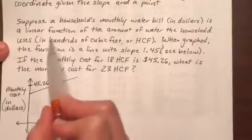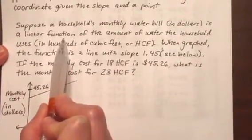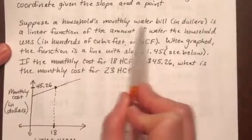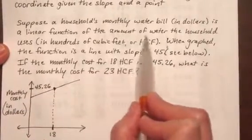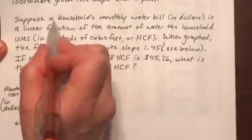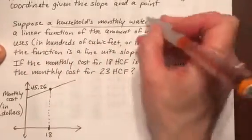The first part says that this is a linear function, which just means a line. It says that a household's monthly water bill is a linear function of the amount of water the household uses. That means a household's monthly water bill is our output, where these are our y-values. You can see them on the y-axis - that's our monthly cost.